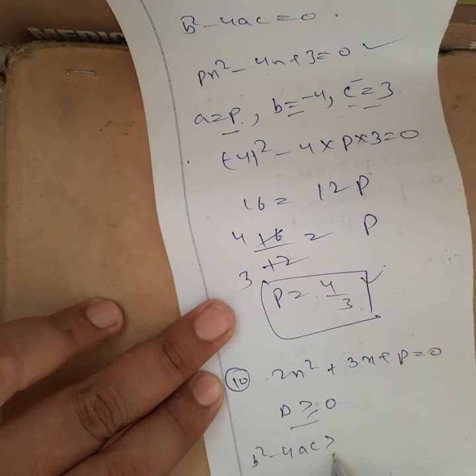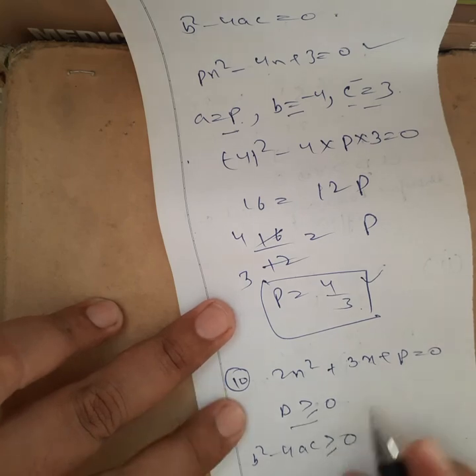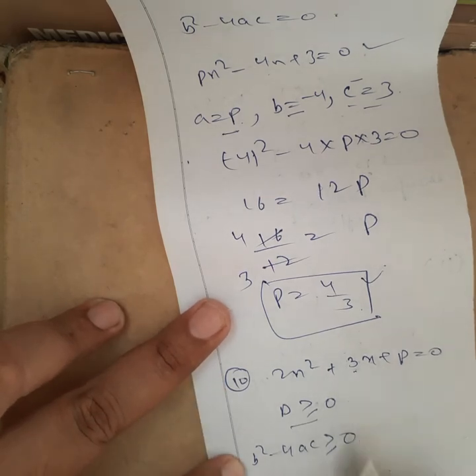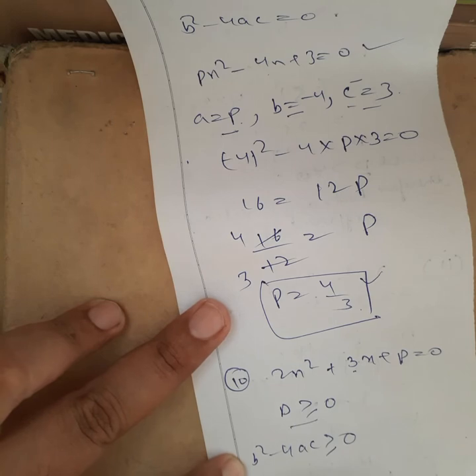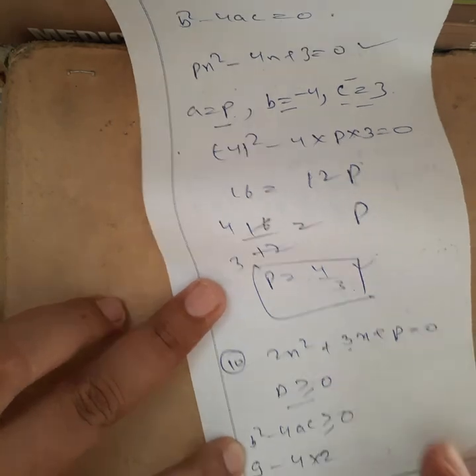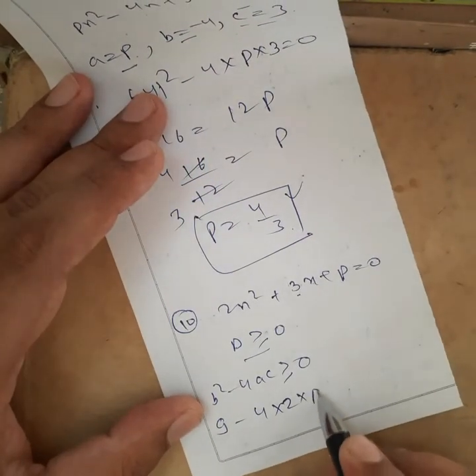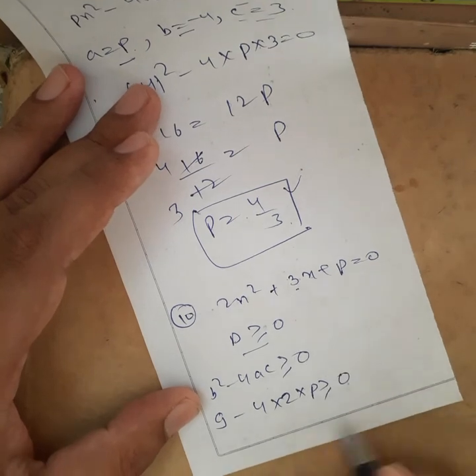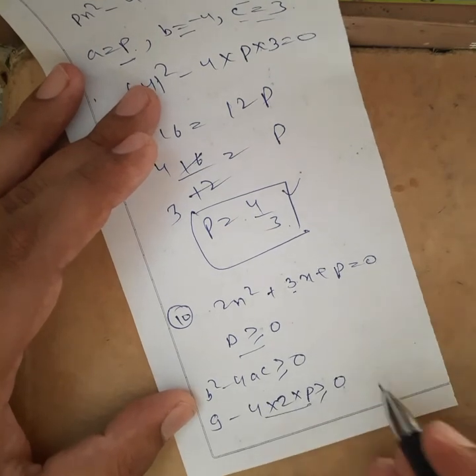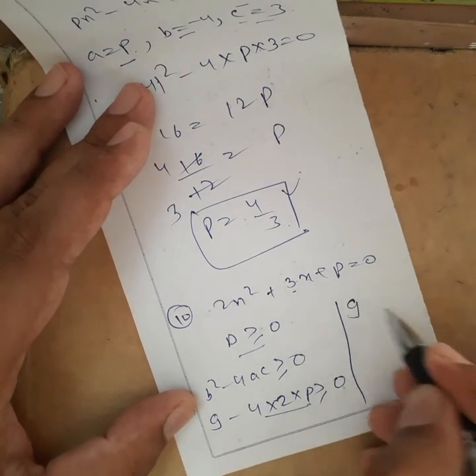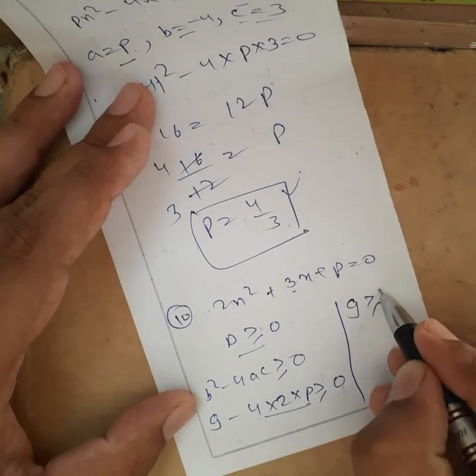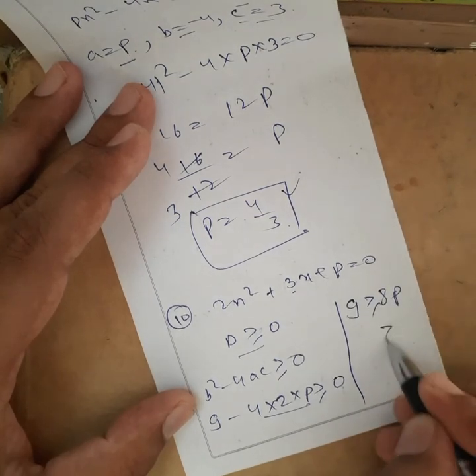Now b is 3, so squaring 3 we get 9 - 4 times a, which is 2, times c, which is p. So 9 - 8p ≥ 0. Now we will move this whole value to the opposite side. We get 9 ≥ 8p.